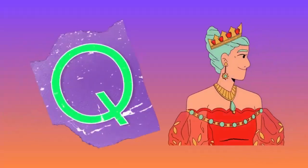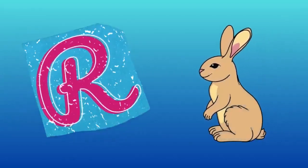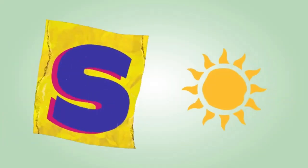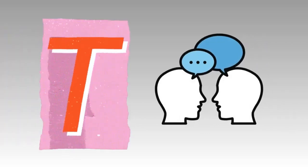Q is for queen, q-q-queen. R is for rabbit, r-r-rabbit. S is for sun, s-s-sun. T is for toad, t-t-toad.